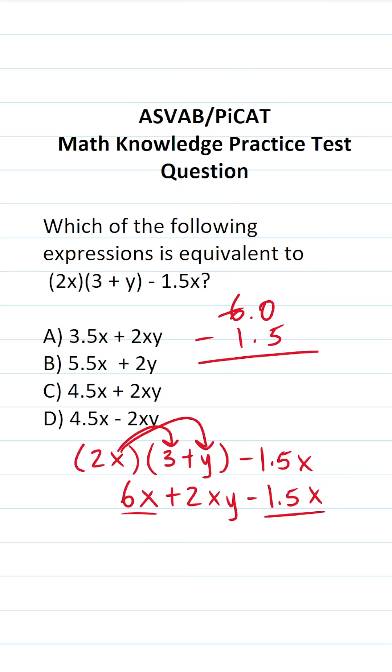We can't do 0 minus 5, so we have to borrow. This becomes 5. This becomes 10. 10 minus 5 is 5. Drop down our decimal. 5 minus 1 is 4.